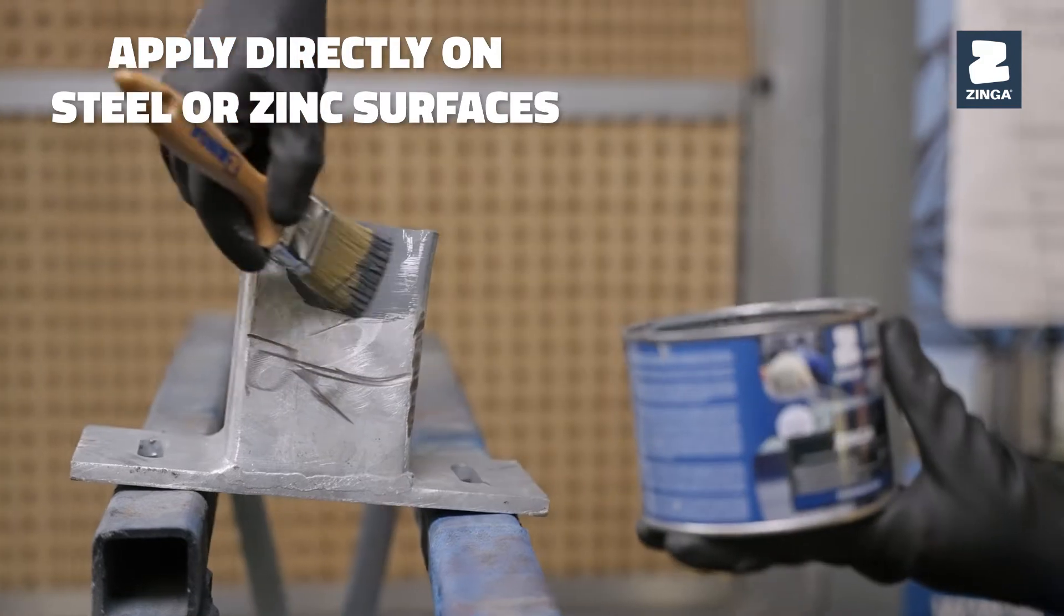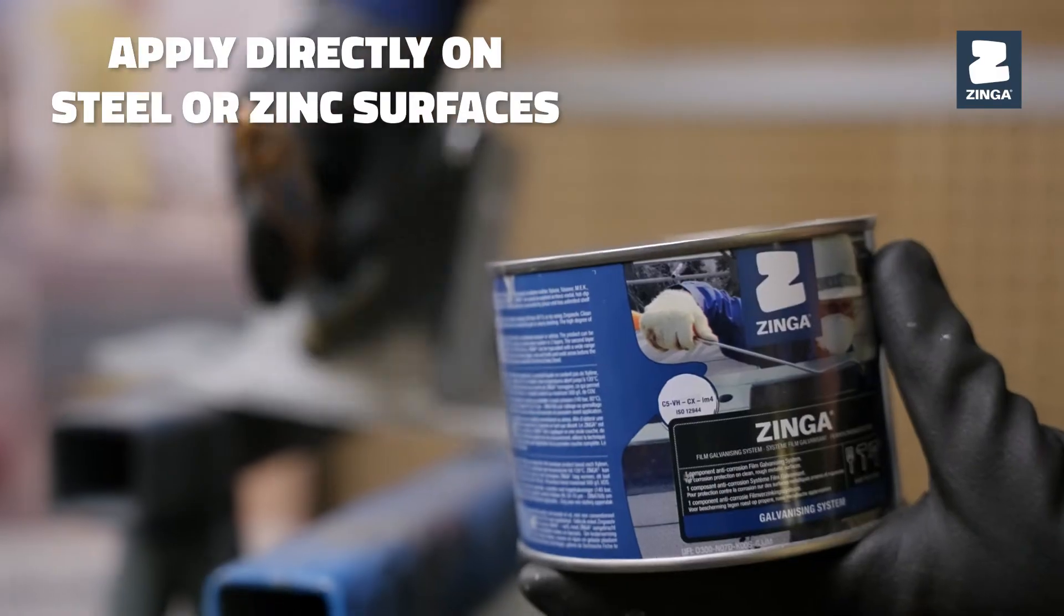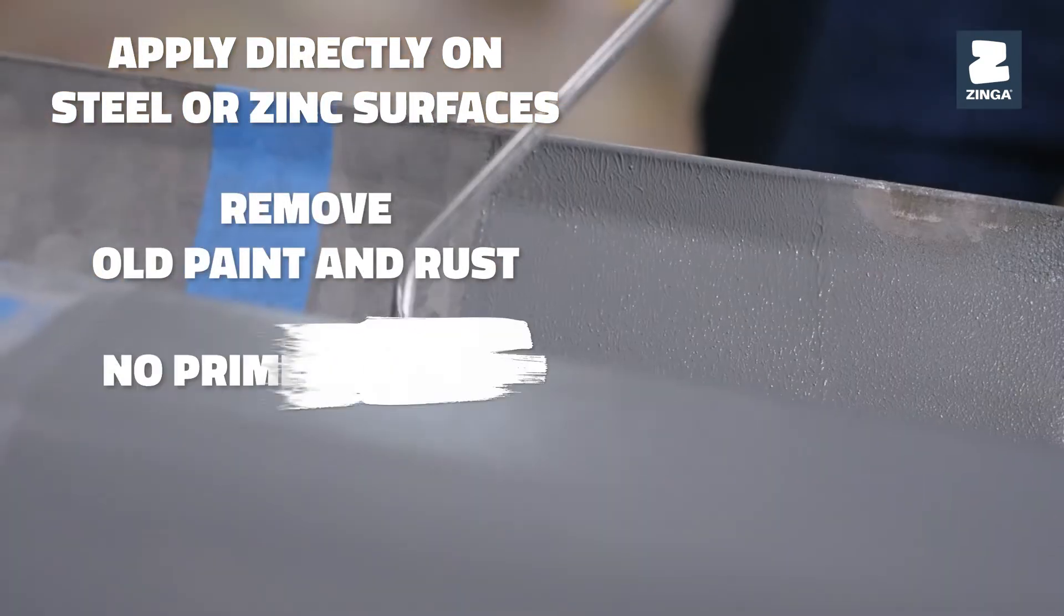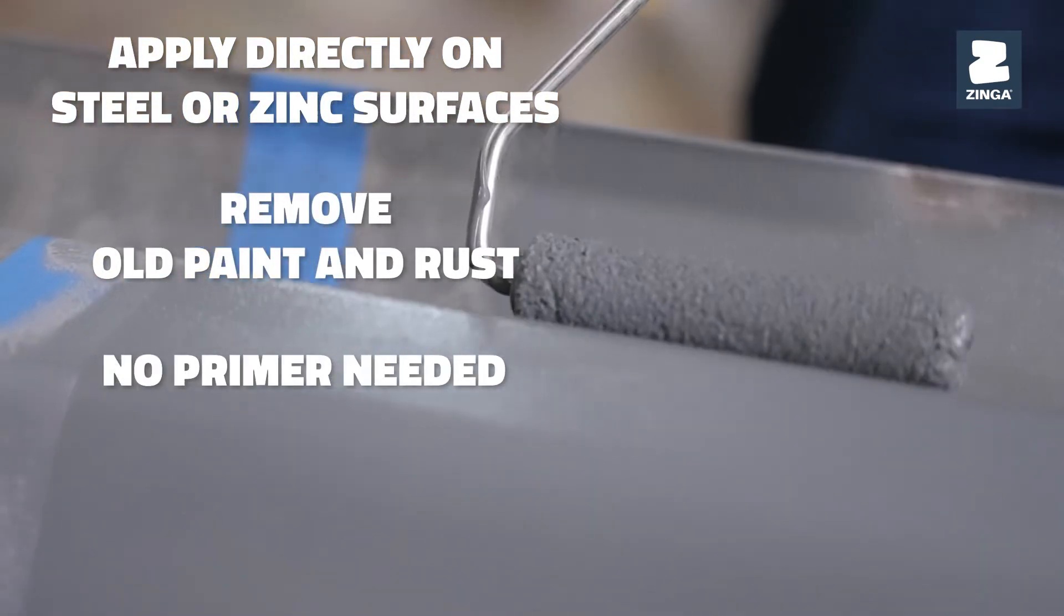Zynga must be applied directly onto steel or zinc surfaces. Remove any old paint and rust. Do not use a primer and there is no requirement to apply a top coat.